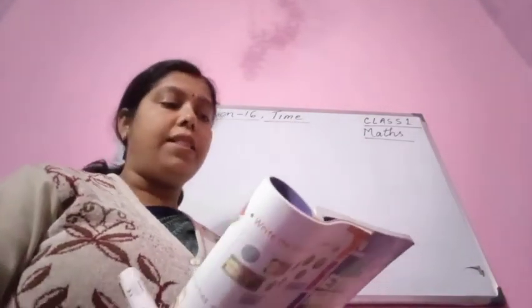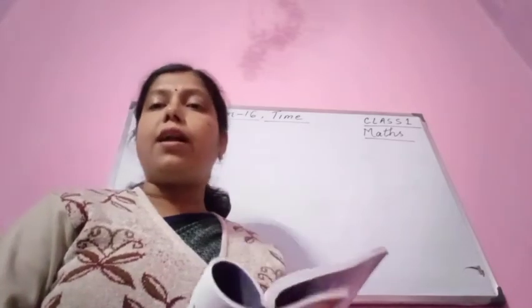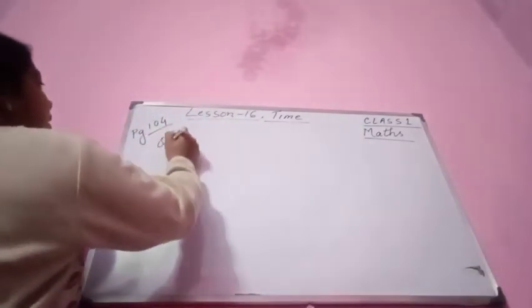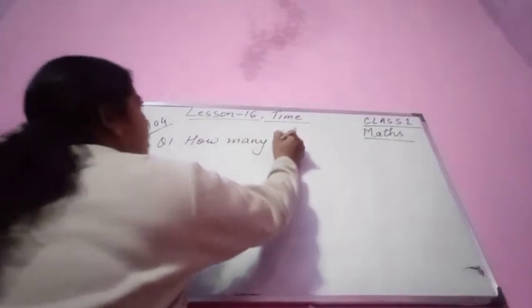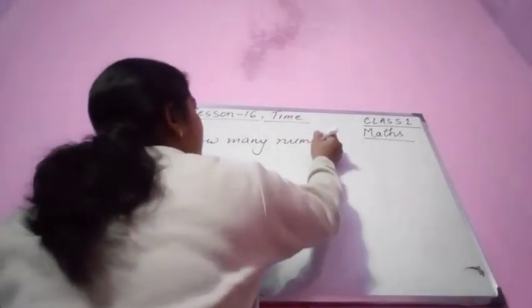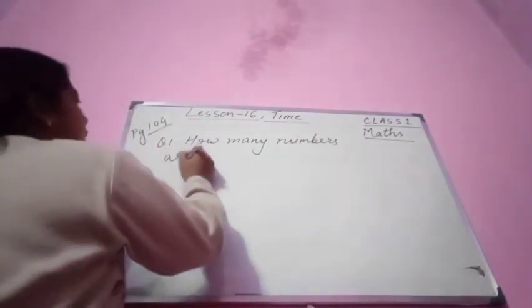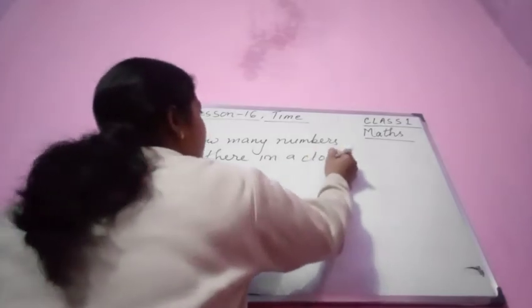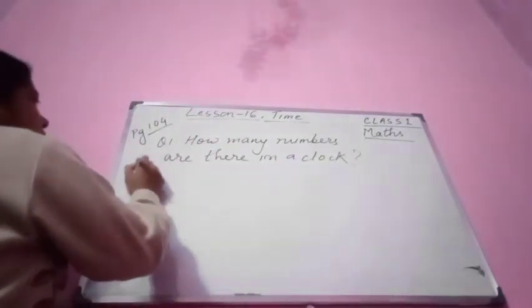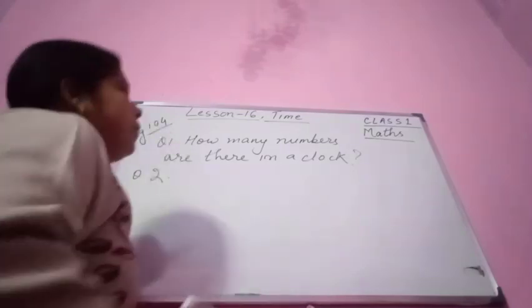A clock is drawn. You can see the numbers are written on it. There are 12 numbers in a clock. How many numbers are there in a clock? There are 12 numbers in a clock. You have to write down the answer yourself.